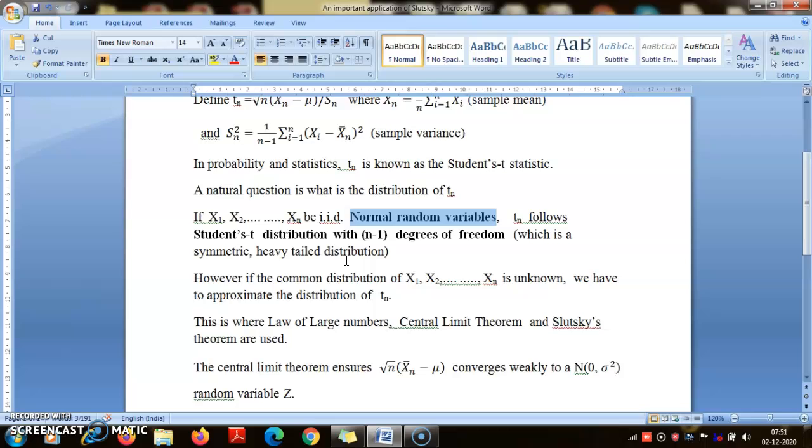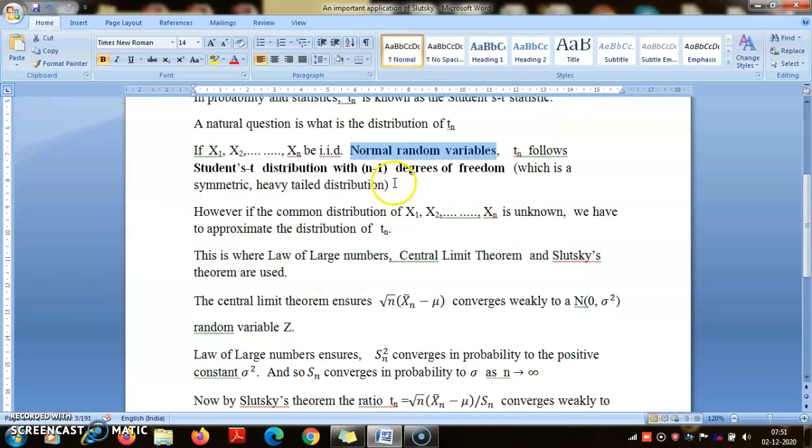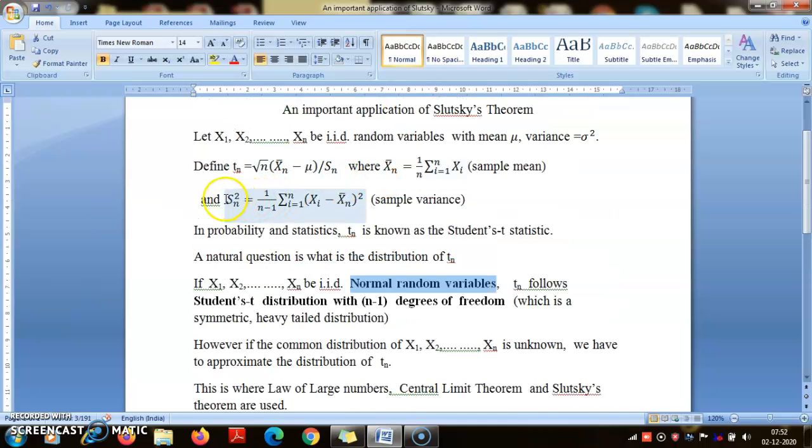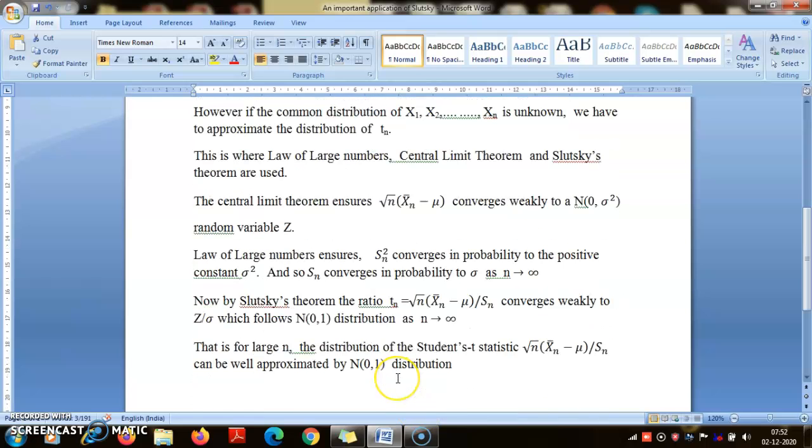And now there is something called Law of Large Numbers or Law of Averages. This will ensure that the denominator, especially the sample variance, will converge to the expected value. What is the expected value of this? This is σ². So the Law of Large Numbers will ensure that Sn² converges in probability to the constant σ², and so Sn converges in probability to σ as n tends to infinity.